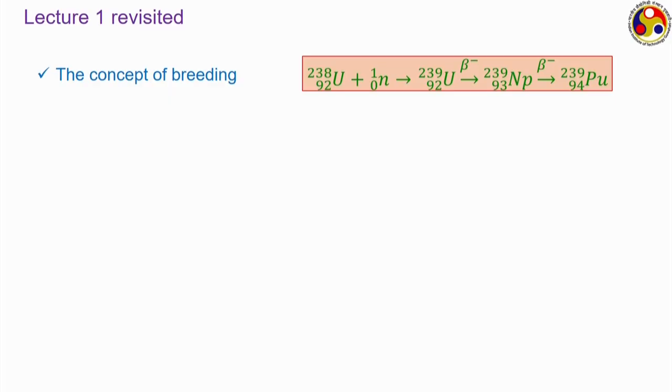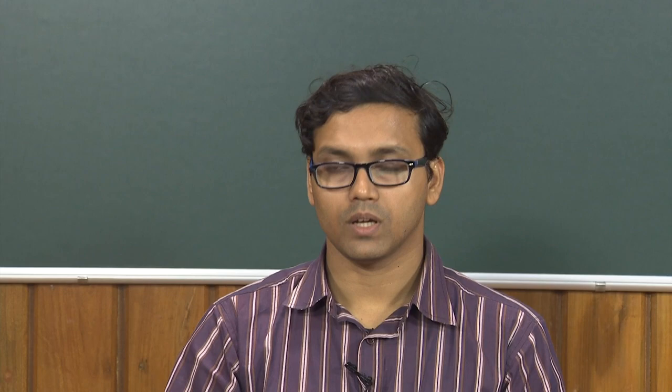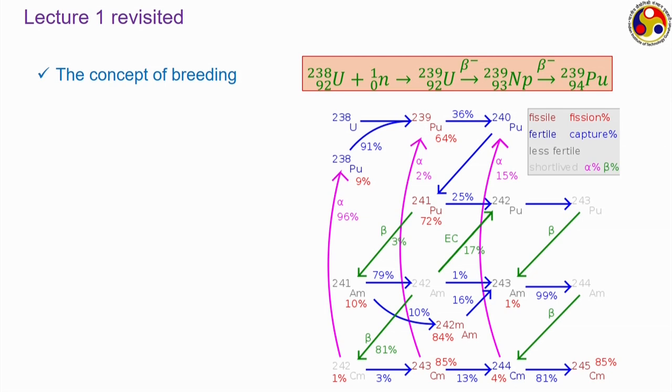In modern thermal reactors fueled purely with uranium, as much as 30 to 40% of total power production may come from plutonium-239, because Pu-239 is an extremely fissile isotope with a significantly high fission absorption cross section. Also, the power harnessed from one fission reaction of Pu-239 is slightly higher than what we can get from U-235. There can also be quite a few other kinds of breeding reactions, as shown through the diagram in the last lecture.